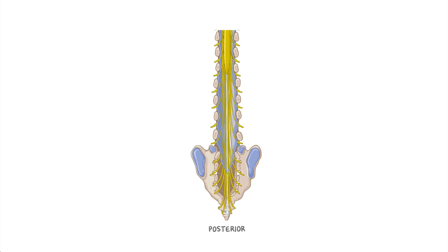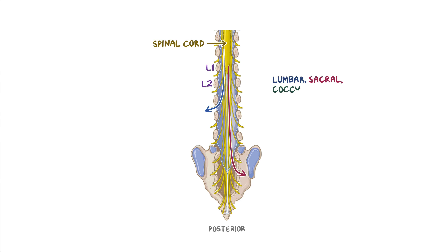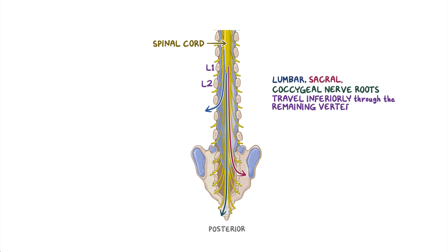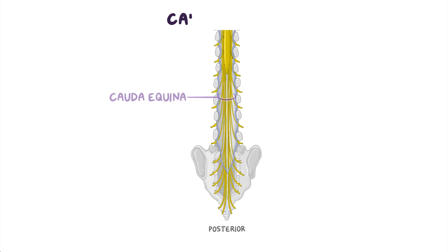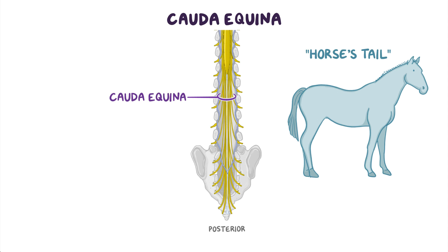Since the spinal cord only extends to the L1-L2 vertebral level, the lumbar, sacral, and coccygeal nerve roots travel inferiorly through the remaining vertebral canal to reach their respective openings. In doing so, they form a bundle of nerve roots inferior to the spinal cord called the cauda equina. Cauda equina is Latin for horse's tail, due to the fact that this bundle of spinal nerve roots resembles the hair of a horse's tail.